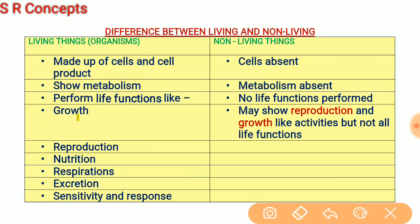Growth is the ability of any living thing to increase in its size. Living things grow by increasing the number of cells or by increasing the size of cells. Reproduction is the process by which living organisms produce their own kind — for example, a bacterium may undergo cell division and make two new bacteria.